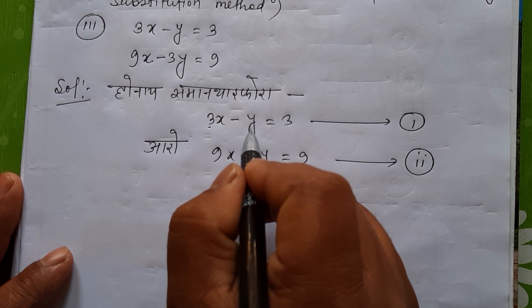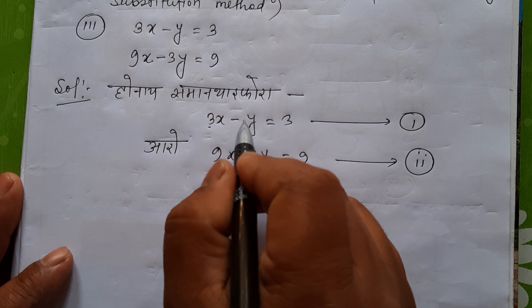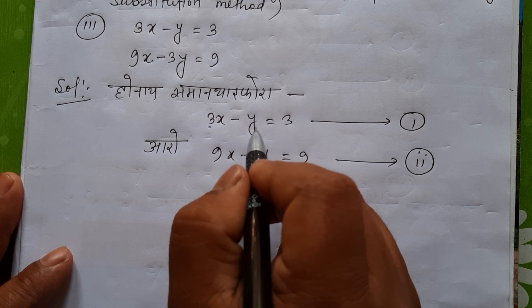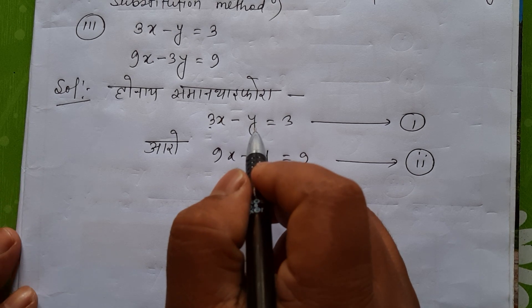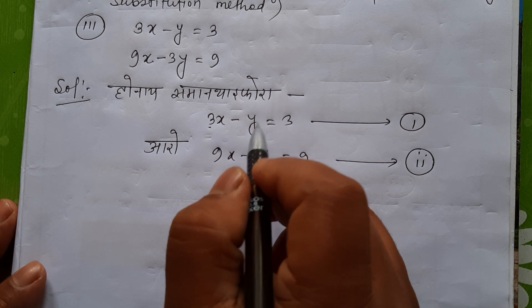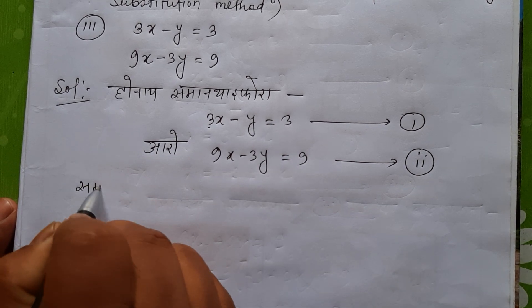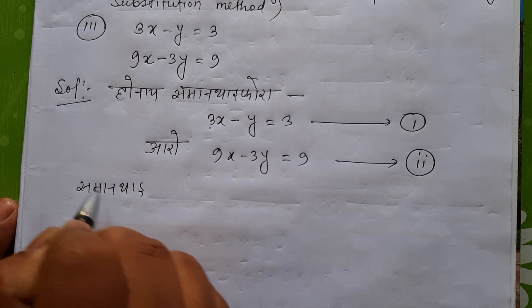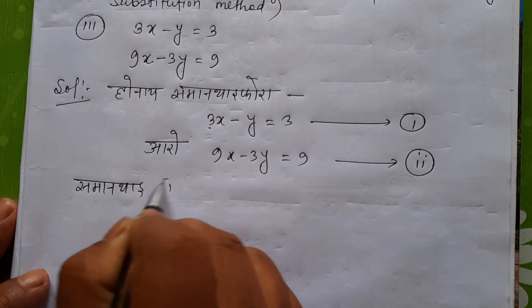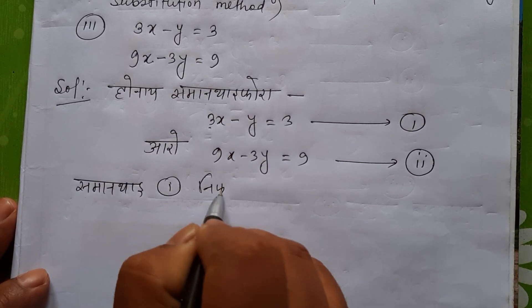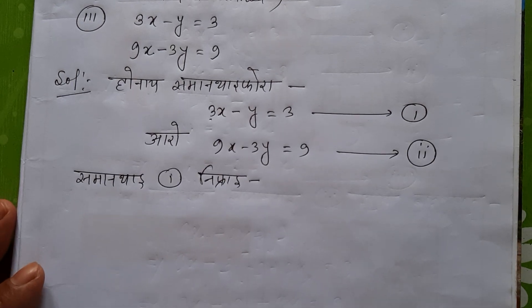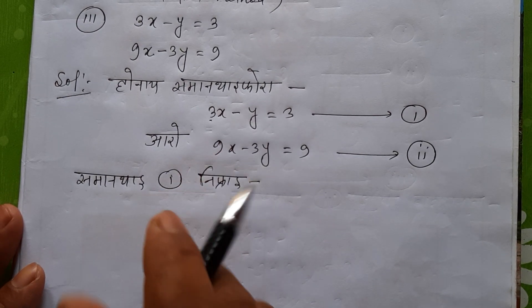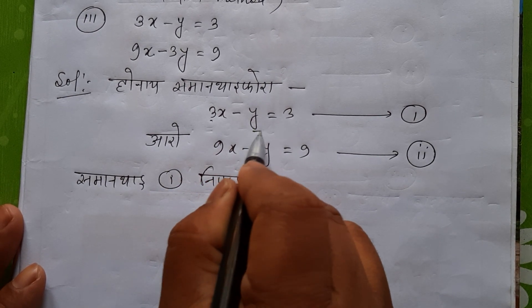If y is more, we can store y. So let's say y is more. Now we can store y to fry y.